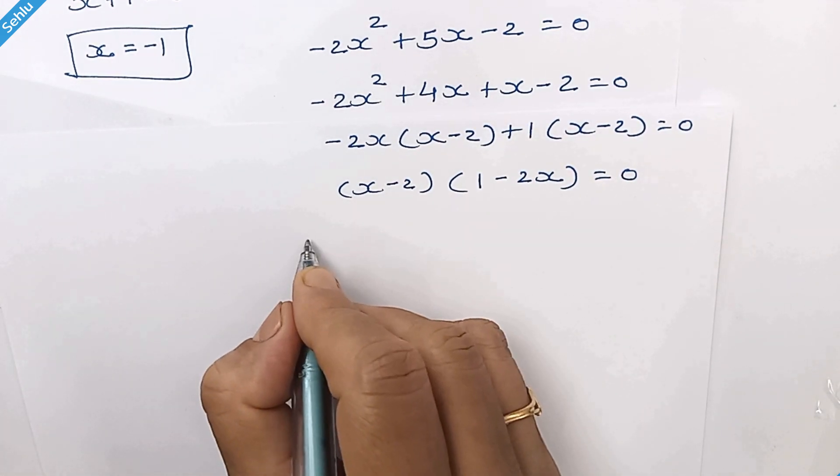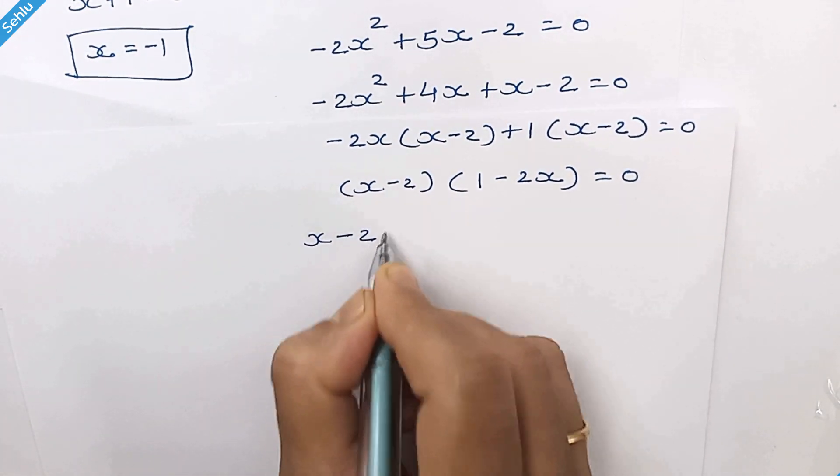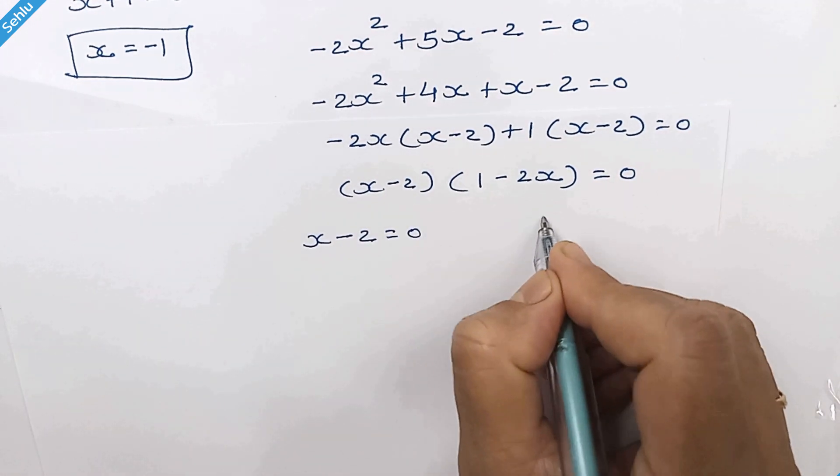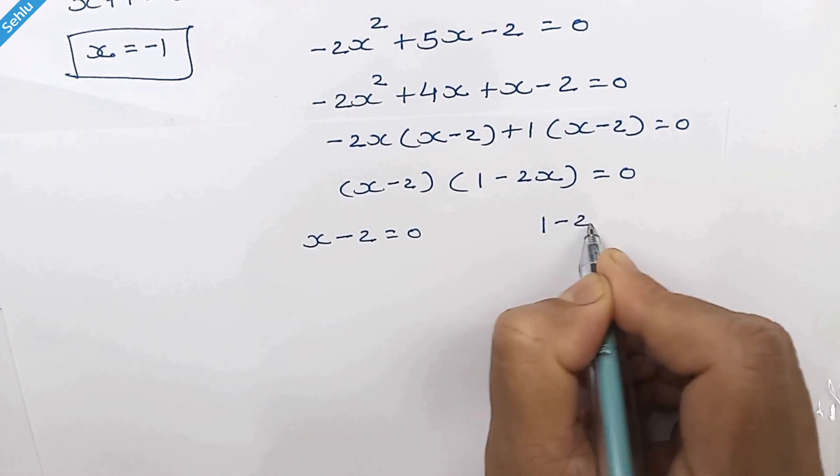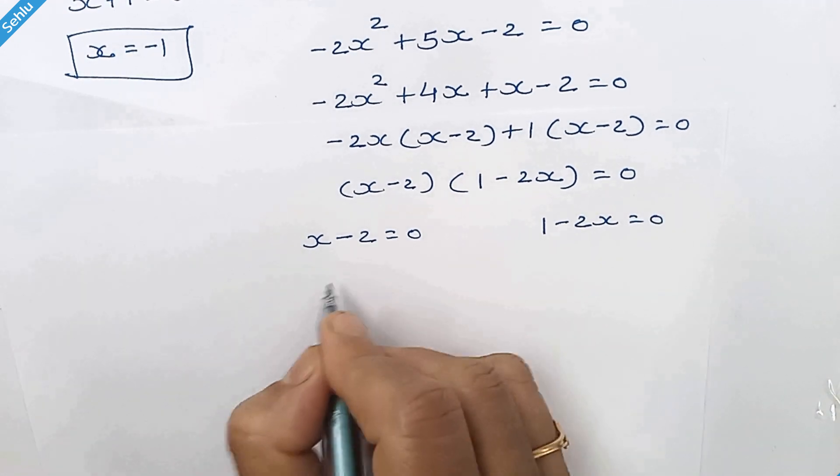It can be either x minus 2 is equal to 0 or 1 minus 2x is equal to 0.